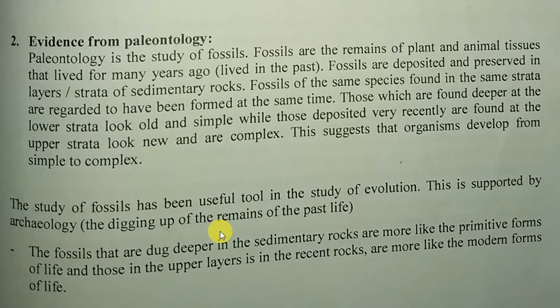Sedimentary rocks are layered rocks formed by accumulation of organic matter in layers. Fossils of the same species found in the same strata are regarded to have been formed at the same time — in the same layer of rock. Those found deeper in the lower strata look old and simple, while those deposited more recently and found in the upper strata look new and are complex. This suggests that organisms developed from simple to complex.